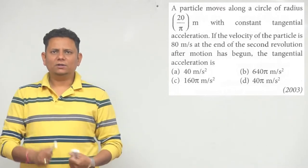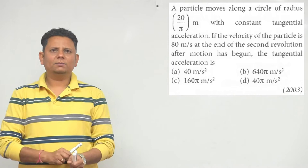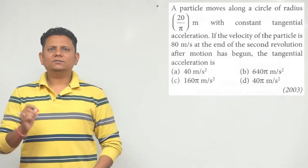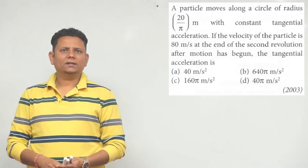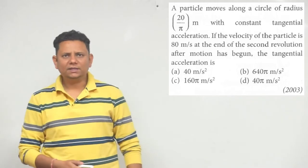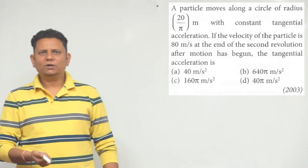The velocity of the particle is 80 meters per second at the end of second revolution after motion has begun. The tangential acceleration we need to find. Our options are: 40 m/s², 640π m/s², 160π m/s², or 40π m/s².